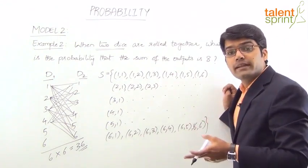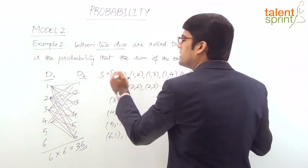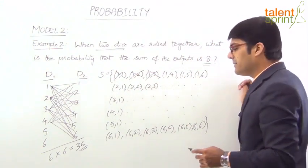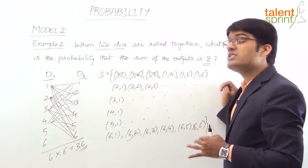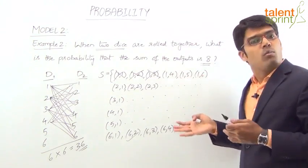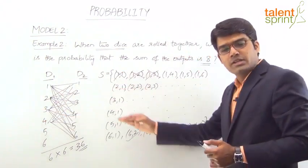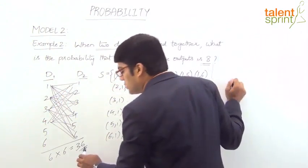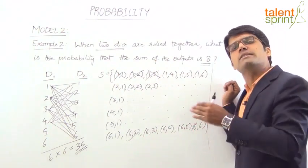Now we choose all outcomes for which the sum equals 8. We go through the pairs: (2,6), (3,5), (4,4), (5,3), (6,2) — checking which pairs give a sum of 8. The denominator is 36 total outcomes. We need to find the number of favorable outcomes where both dice sum to 8.